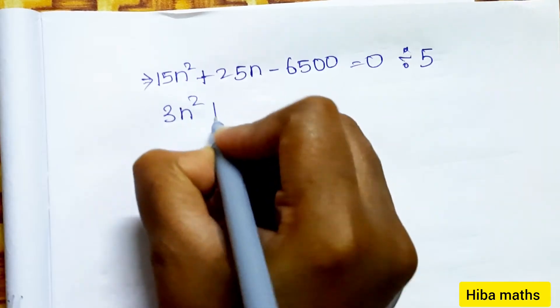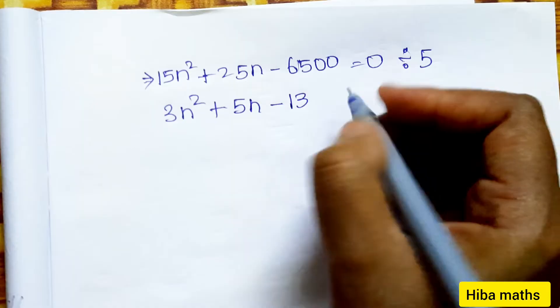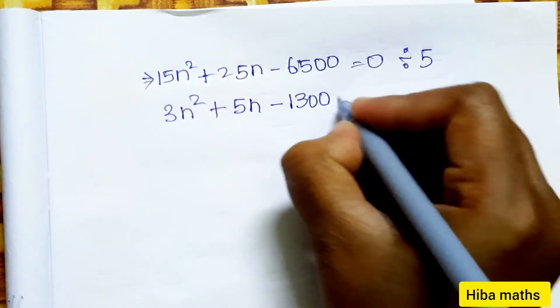Taking 5 common, dividing the full equation by 5, we get 3n² + 5n - 1300 = 0.